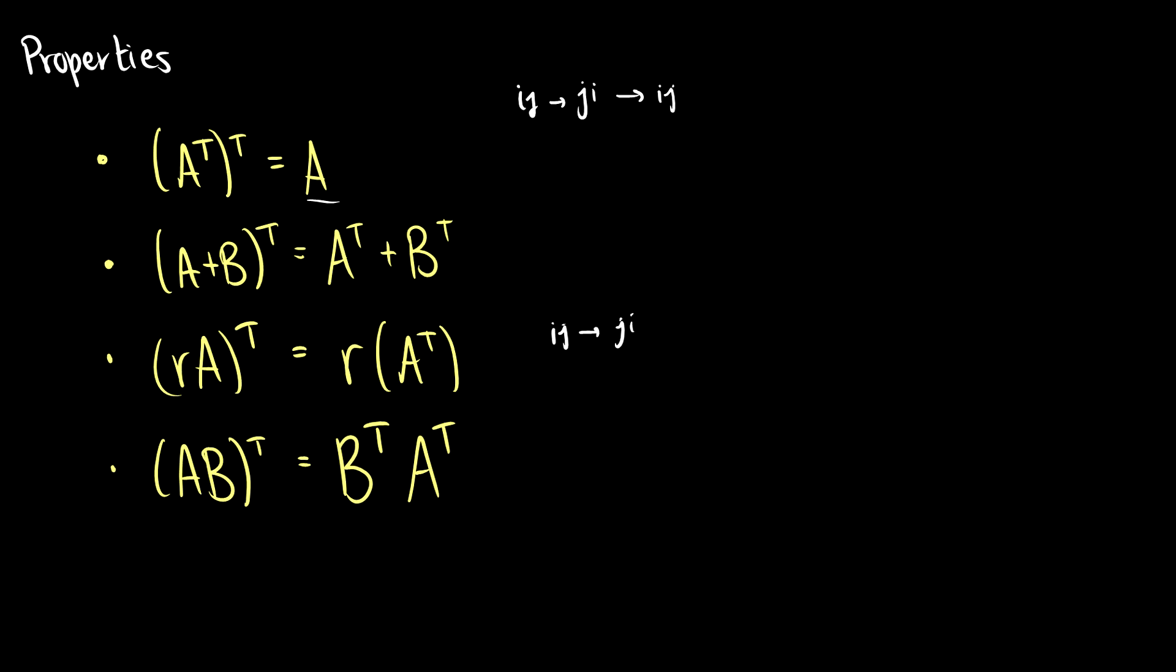And then finally, the fourth property, which we'll prove, is that if you take the transpose of two multiplied matrices A and B, that's the same thing as taking the transpose of B and multiplying it by the transpose of A. So the order is flipped when you do the transpose.